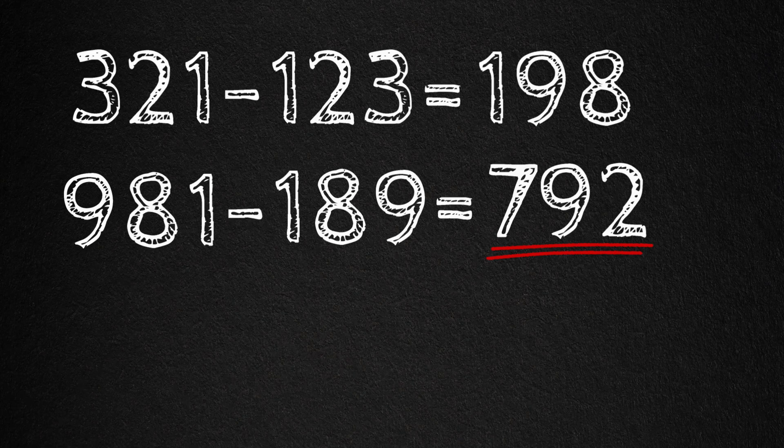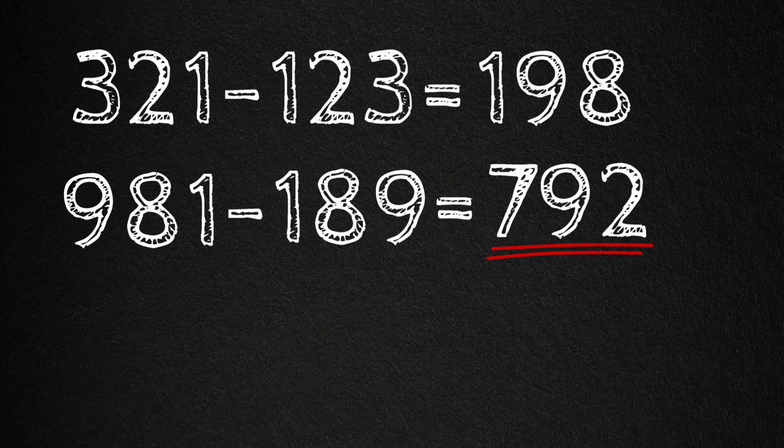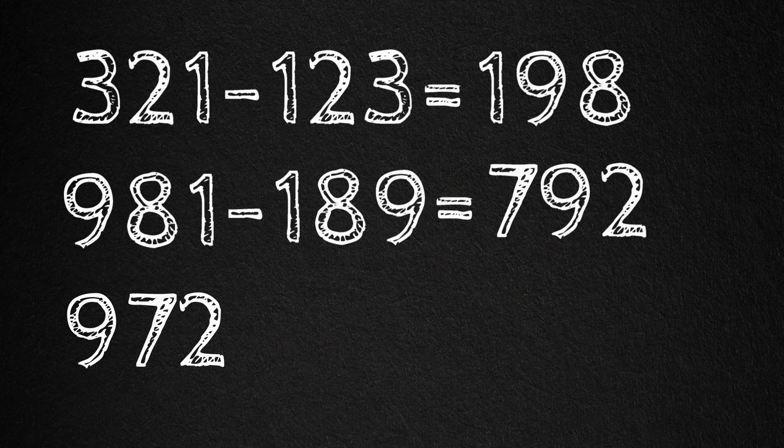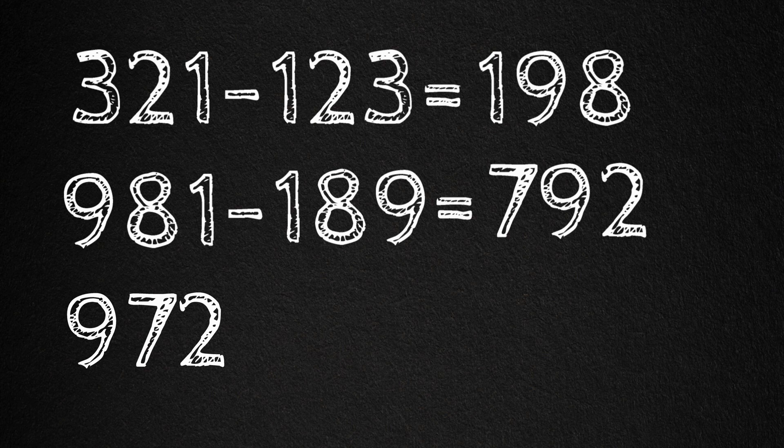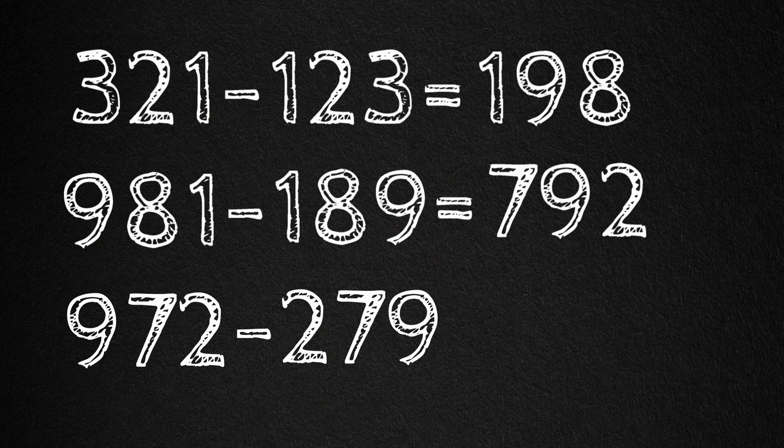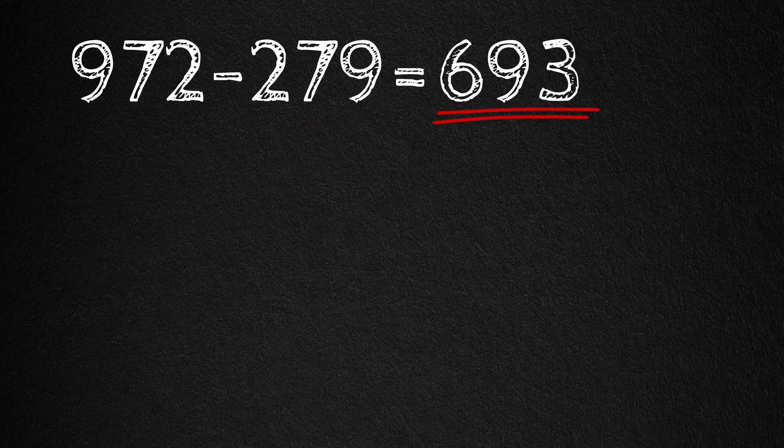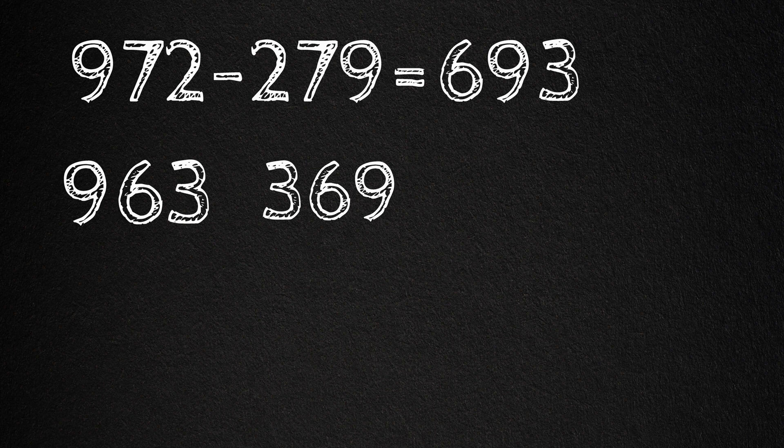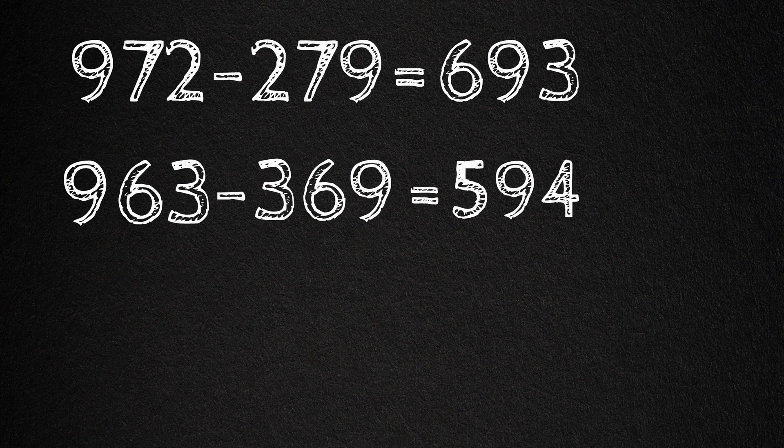Repeat. 792 arranged in descending order. So that's 972 minus 279. Subtract 972 minus 279, and we get 693. Okay, again, take 693 and arrange it in descending order. So that's 963. And ascending order is 369. Subtract the two numbers and we get 594.